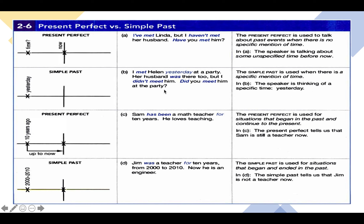'Did you meet him at the party?' All of this is talking about yesterday — an exact, specific time — so for all the verbs we use the simple past: 'met,' 'was,' 'did you meet,' 'didn't meet.' When the exact time of the action is known, we use the simple past.